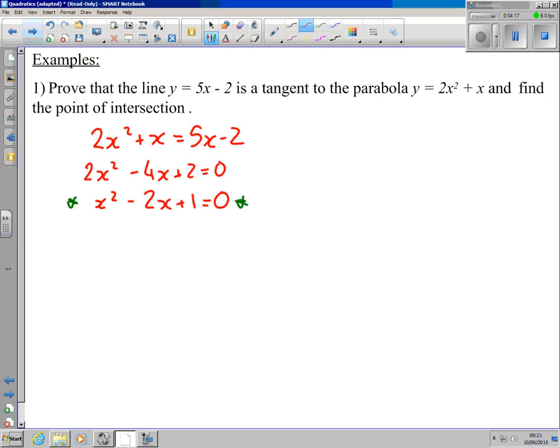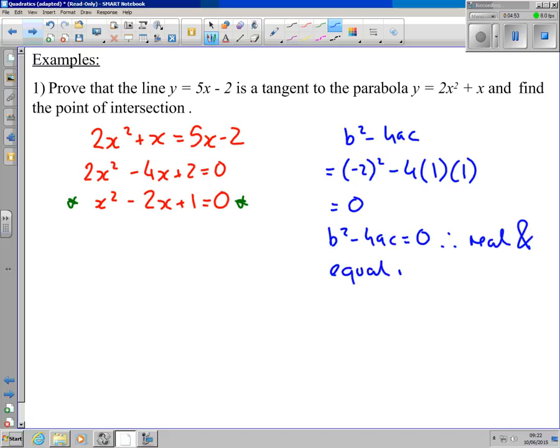Now if the line is a tangent, then that discriminant's got to be zero. So to prove there is a tangent, I'm going to find my discriminant. b² - 4ac equals (-2)² - 4(1)(1), so 4 - 4 = 0. b² - 4ac = 0, therefore real and equal roots, and the line is a tangent to the curve. So that's the first part proved, that it's a tangent.